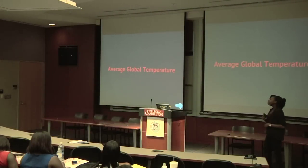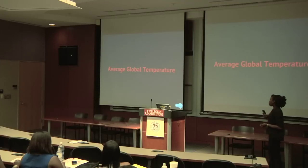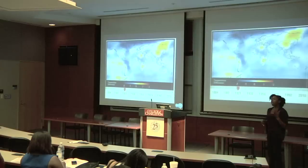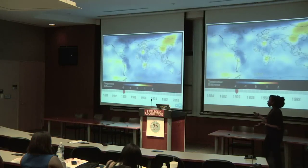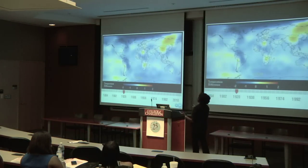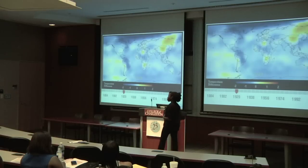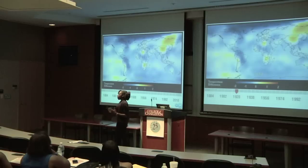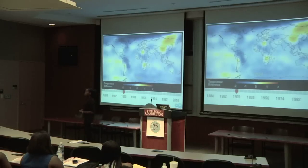Average global temperature has also increased dramatically over the past couple of decades. The following images come from NASA. The cooler colors represent colder temperatures, and the warmer colors such as orange and red represent warmer temperatures. These graphs are shown in increments of 20 years.